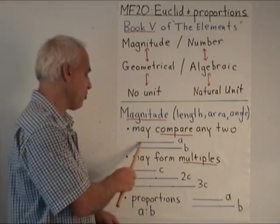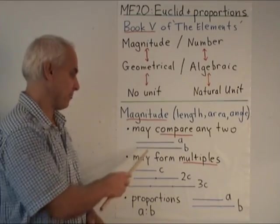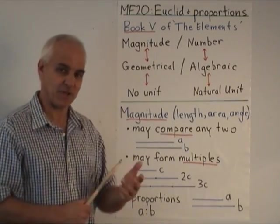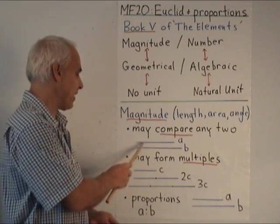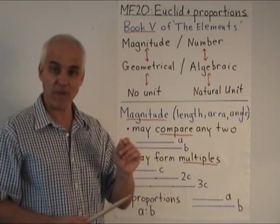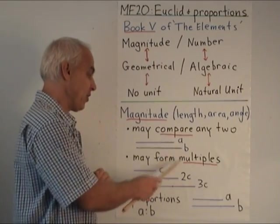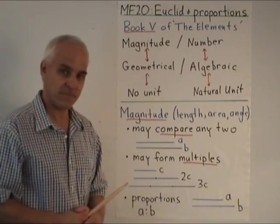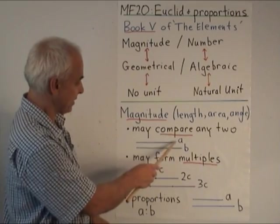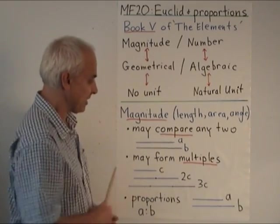they assumed that given two magnitudes, and I'll suppose that we're talking about lengths to be explicit, but given any two magnitudes, we can always compare them and see whether they're equal, or whether a is less than b, or whether a is bigger than b. So in this case here, we can see that this magnitude a is less than this magnitude b.